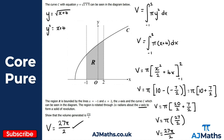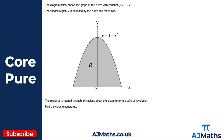That's example one done. In example two, we have y = 1 - x², with shaded region R bounded by the curve and the x-axis. This region R is rotated through 2π radians about the x-axis, forming a solid of revolution. We want to find the volume. We're using the same formula: V equals the integral of πy² — again rotating about the x-axis so it's πy².